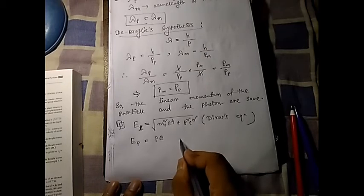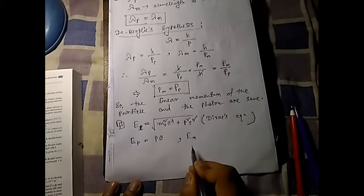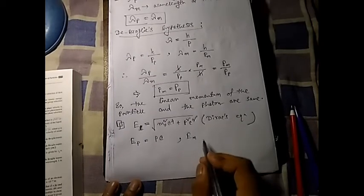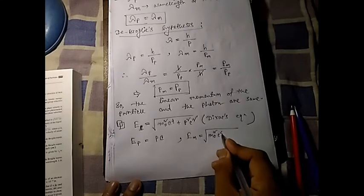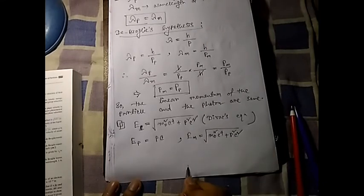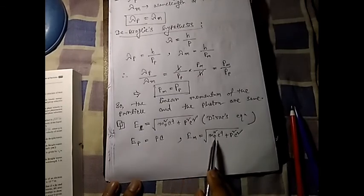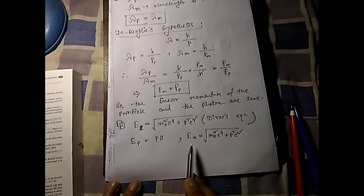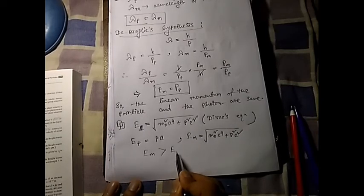Here p is the momentum and c is the velocity of light. For the particle's total energy E_m, using Dirac's formula it is the square root of m-naught squared c to the power 4 plus p squared c squared. Since the particle's rest mass is not zero, E_m has an extra term m-naught squared c to the power 4. For this reason, E_m will be greater than the photon's energy E_p.